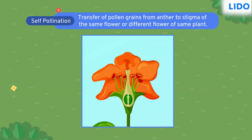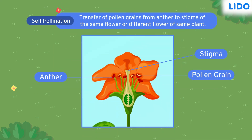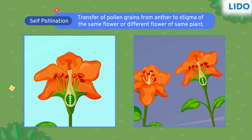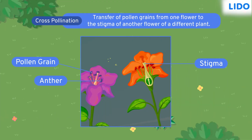If the pollen grain of a flower is transferred to the stigma of the same flower or of a different flower of the same plant, we call it self-pollination. But if the pollen grains of one flower of a plant are transferred to the stigma of the flower of another plant, we call it cross-pollination.